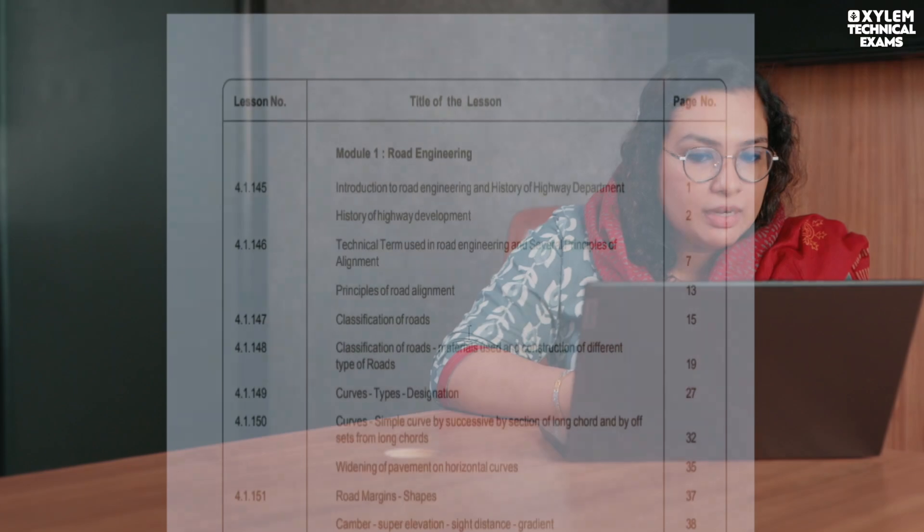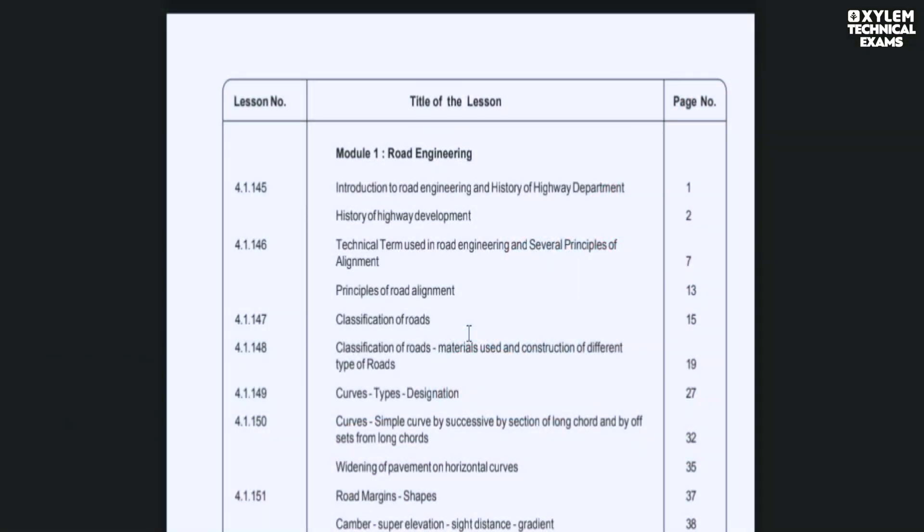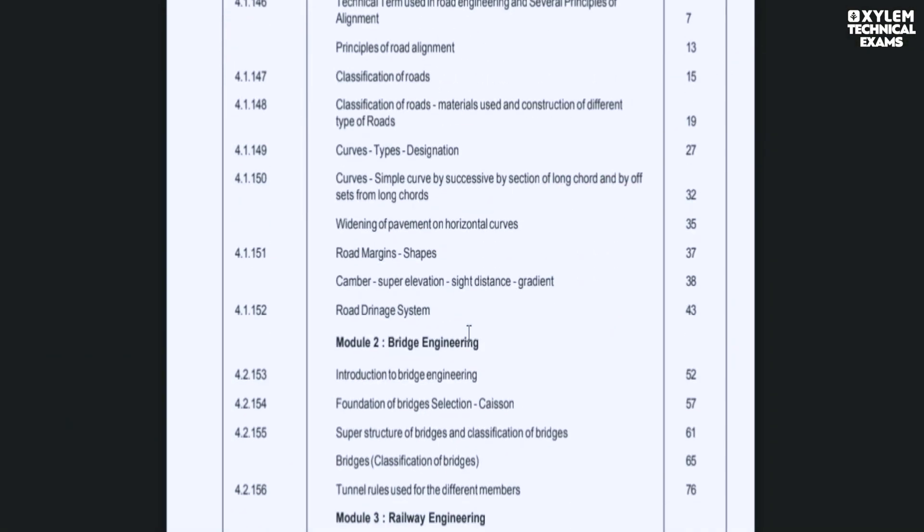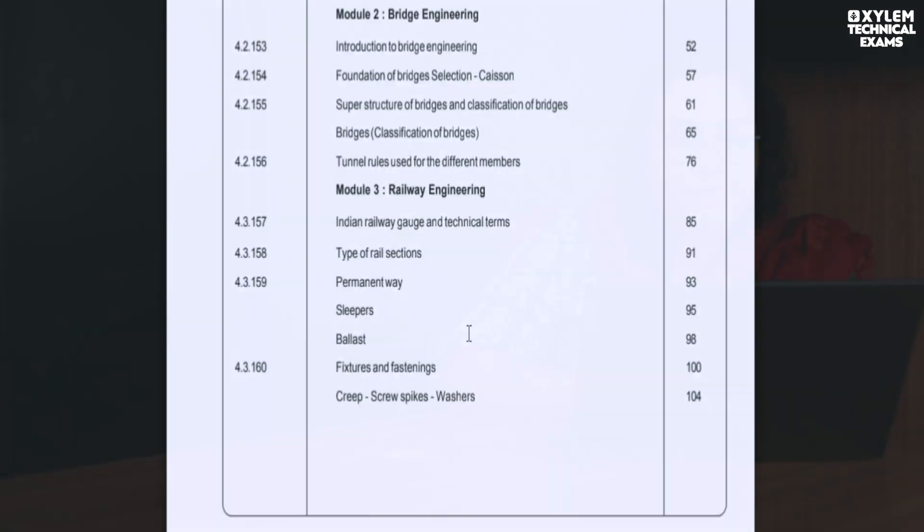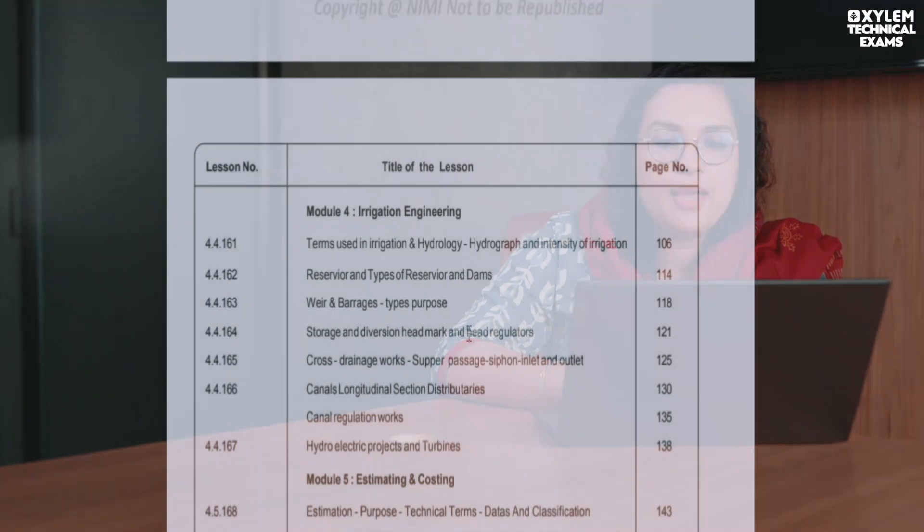The last semester, or the fourth semester, covers transportation. The road, transportation, bridge engineering, and railway engineering are included. The first topic is irrigation and estimation. The second semester survey also includes some other portions such as total station, GPS, and modules. Any modules can be included in any semester.